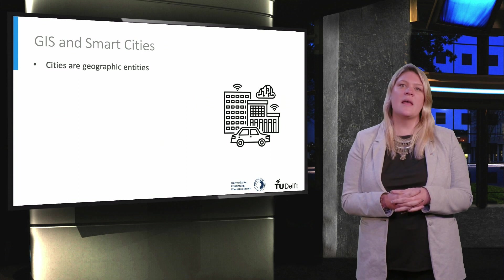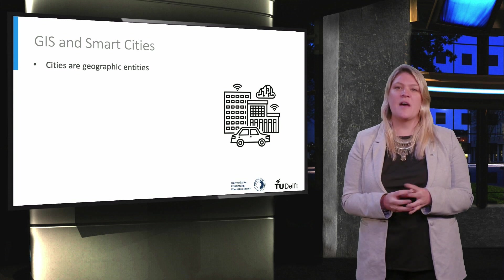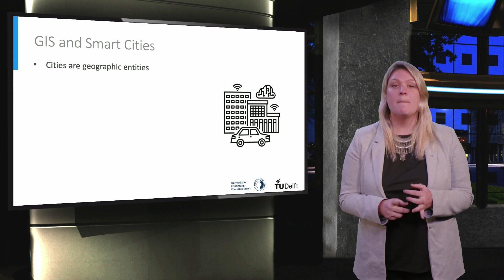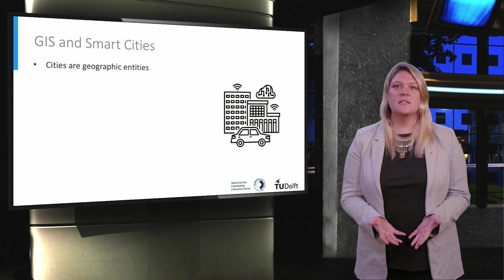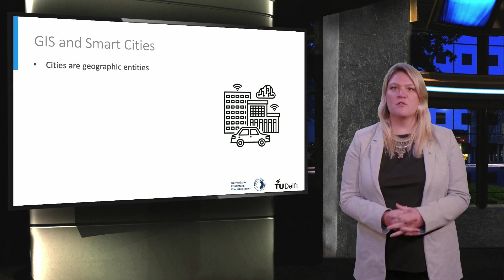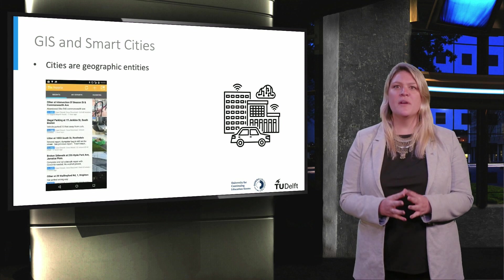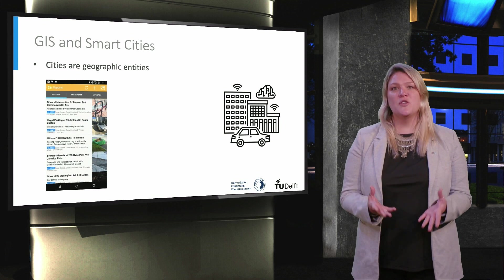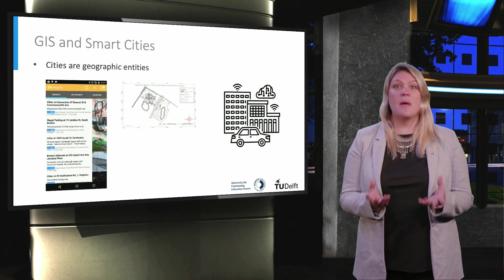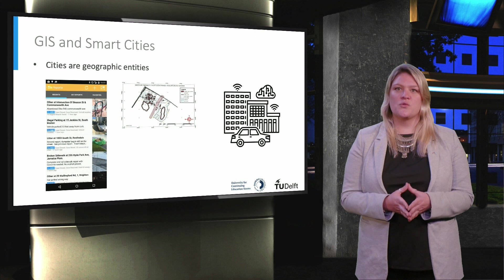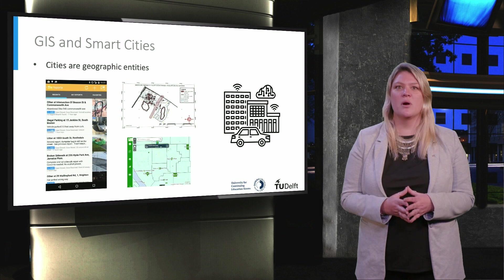Now let's see how GIS relates to smart sustainable cities. Cities are by definition geographic entities. They have a defined geographic area made up of streets, buildings, parks, a transportation network — all geographically defined features, interconnected in a system. For this reason, geographic information systems are important building blocks of smart cities. A GIS may be used to collect and visualize reports of issues in public spaces by its citizens, as is shown here. It may be a system that identifies irregular constructions by analyzing aerial photos, or it may be a database for managing all the trees in public parks of a city.